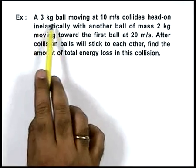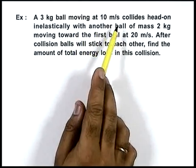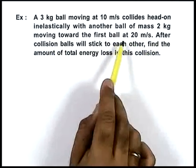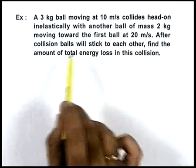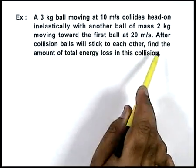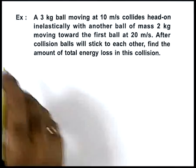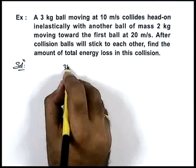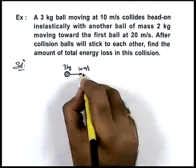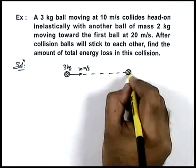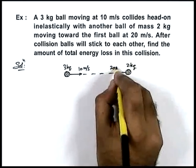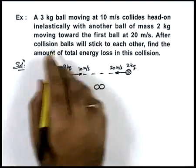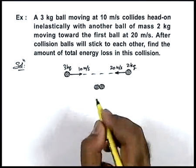This example says that a 3 kg ball moving at 10 meters per second collides head-on inelastically with another ball of mass 2 kg moving towards the first ball at 20 meters per second. After collision the balls stick to each other, and we are required to find the total energy loss in this collision. Since they stick together, the collision is perfectly inelastic.